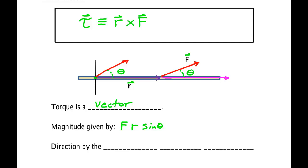This says take the length of r, the length of F, and the sine of the angle. This is best done when things are in polar form and you know this length, this force, and this angle.